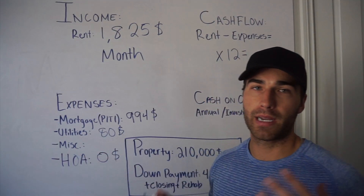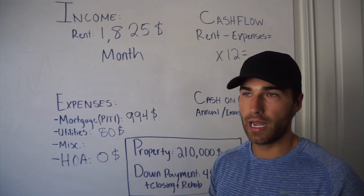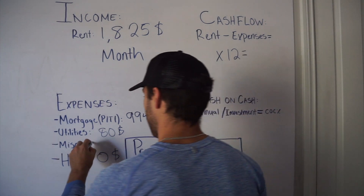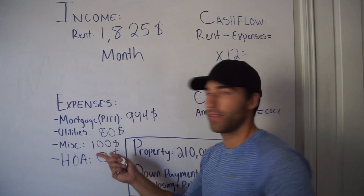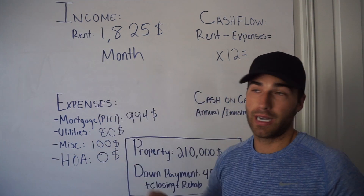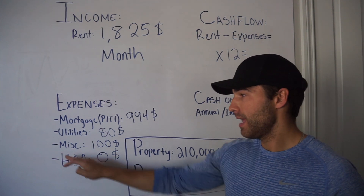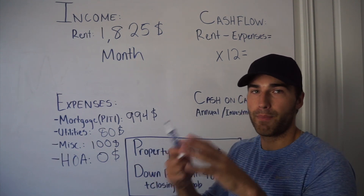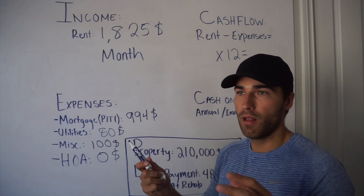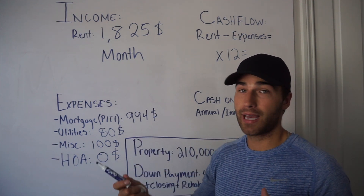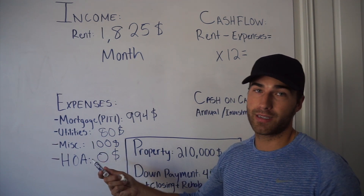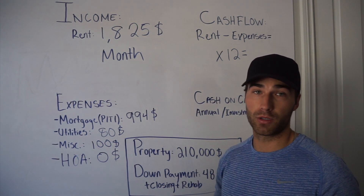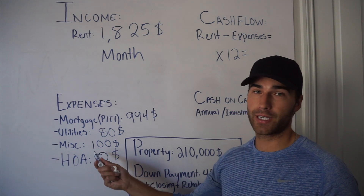Miscellaneous covers things like repairs and big capex expenses — like maybe you need a new AC unit. I always set aside about $100 a month into my account, so if I need to repair something I'll have that extra money built up over one to two years, which can easily add up to $1,000 to $3,000. All my monthly income from these properties sits in a bank account specifically for that property — I don't commingle my personal and housing banking accounts. But this miscellaneous reserve is important for anyone who pulls out money from their properties each month.